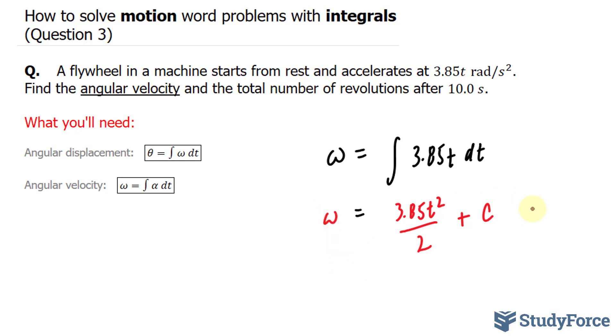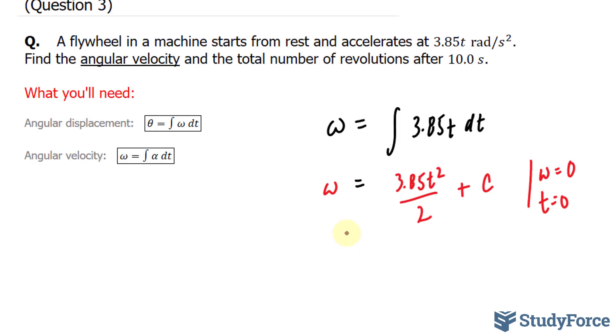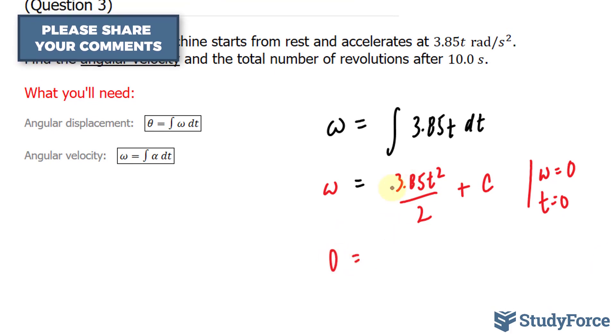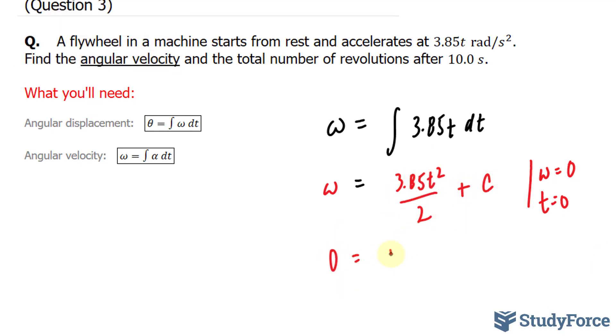So I'm going to set omega equal to 0 and t equal to 0. This gives me 0 is equal to 3.85 times 0 to the power of 2, that's 0, plus c. My constant here is c.